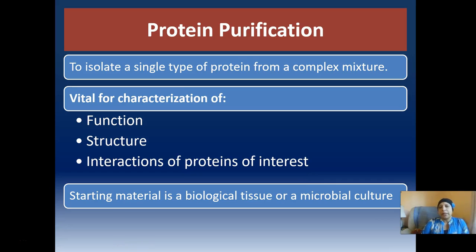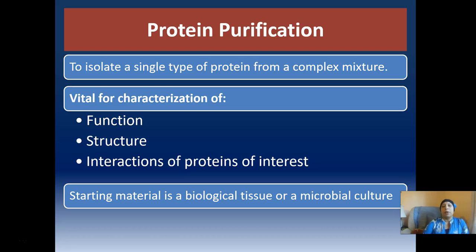So why do we purify protein and how do we purify protein? Protein purification is extremely important in many types of molecular biology analyses, as well as in biochemistry and chemical analyses of different pathways and systems. It basically means that we are either trying to purify a single specific type of protein of interest from a complex mixture, or a small group of proteins, and it's usually important to characterize the function, structure, and interactions of that protein — what proteins it might bind to, what parts of DNA or RNA it might bind to.